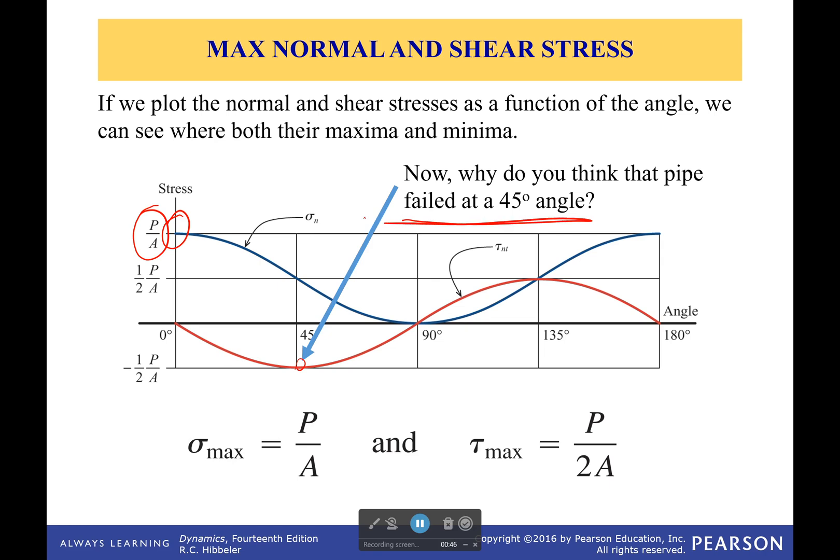Well a lot of materials have different strengths and weaknesses when it comes to either normal or shear stress. Some are very good at resisting shear stress, some are terrible at resisting shear stress. And it looks like that pipe was not very good at resisting shear stress. So it failed when the shear stress went above a certain amount of value.